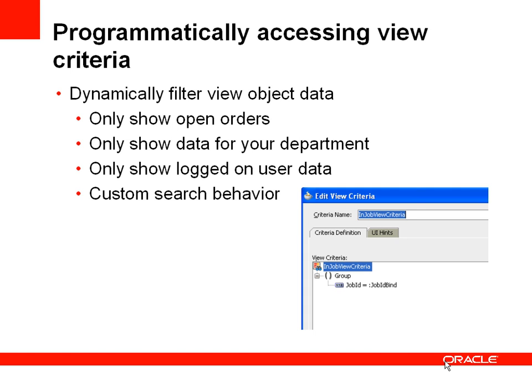So first of all, what's a view criteria? A view criteria is a predefined filter that can be applied to a view object, which essentially affects your where clause. You might want to dynamically filter a view of data depending on some action within your application — for example, only showing open orders, data for the current department, the current user, or implementing custom search behaviour where a user enters data and presses a button to apply a filter.